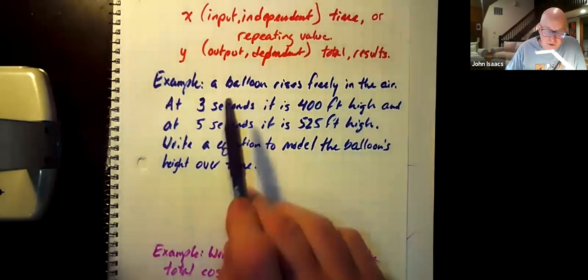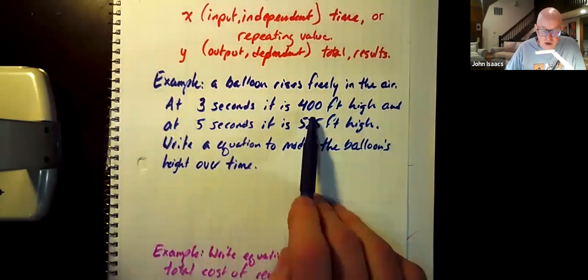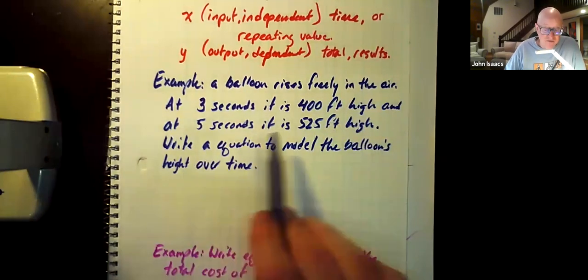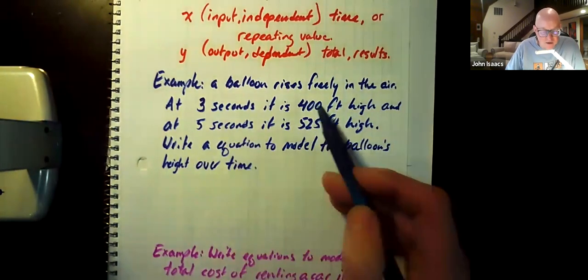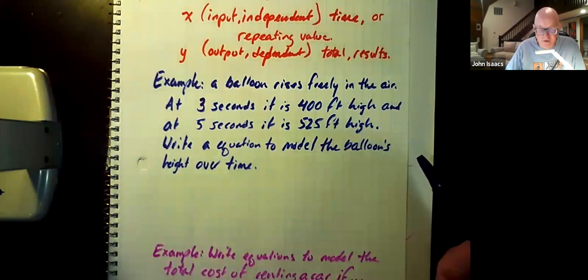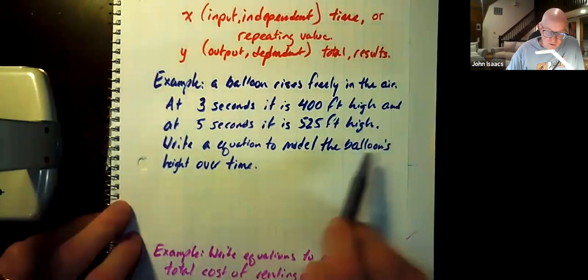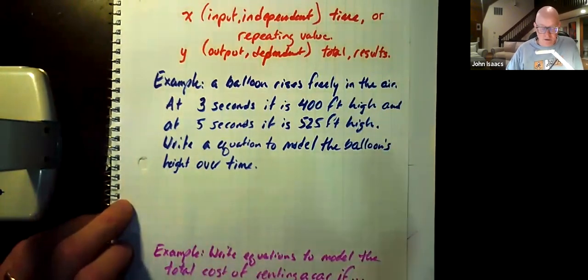Example, a balloon rises freely in the air. At three seconds, it is 400 feet high. So it's 400 feet high at three seconds. And at five seconds, it's 525 feet high. So it seems like in those two seconds, it's risen 125 feet. Write an equation to model the balloon's height over time. Okay. Now, first of all, we have to have our variables down.